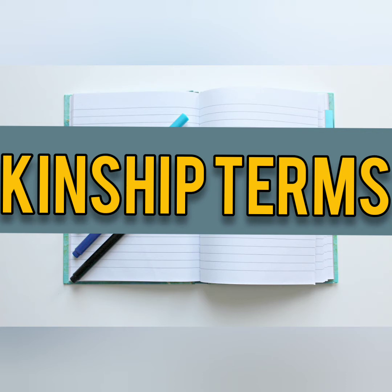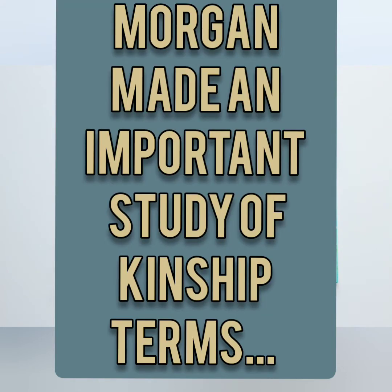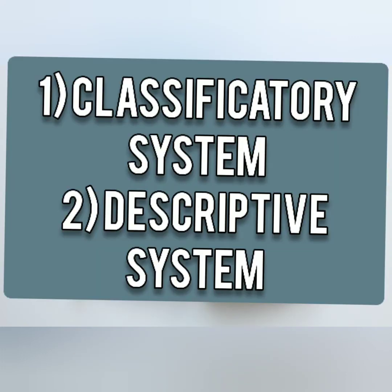Kinship terms are those terms which are used in designating kin of various types. Such types of kinship systems were studied by Morgan, who made an important study of kinship terms. He classified these terms into two: the first one is the classificatory system, and the second one is the descriptive system.